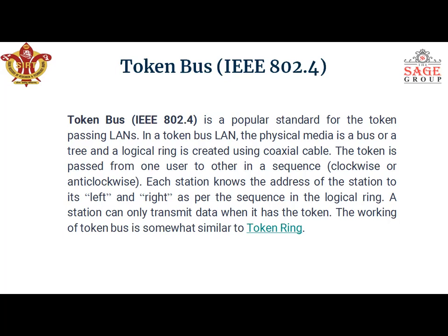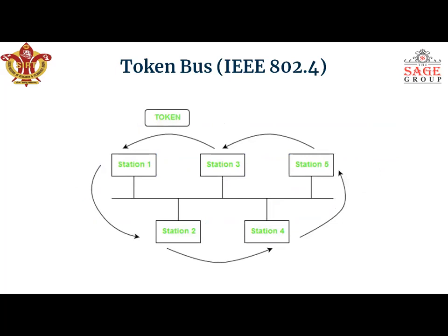The working of Token Bus is somewhat similar to Token Ring. In this diagram, we can see there are five different stations — station one, two, three, four, and five — and they are sending data in an anticlockwise direction, though data can also be sent clockwise. Whenever any station wants to transmit data, it first claims a token. That token is removed from the logical ring, and instead, the data packet is placed along the logical ring.